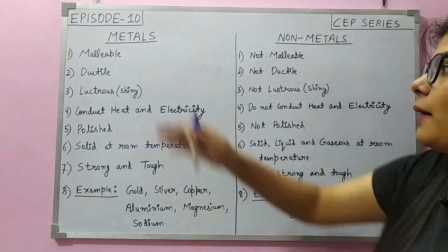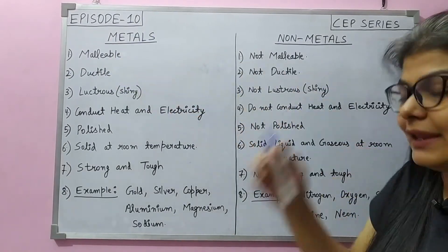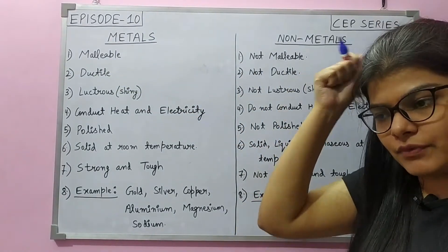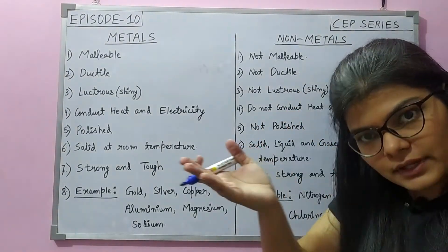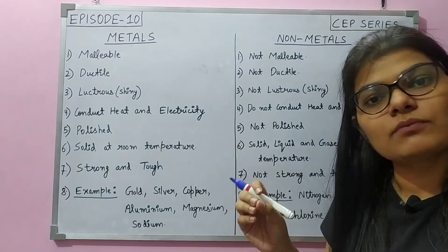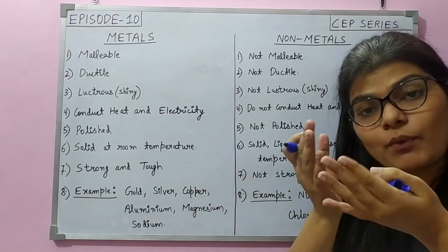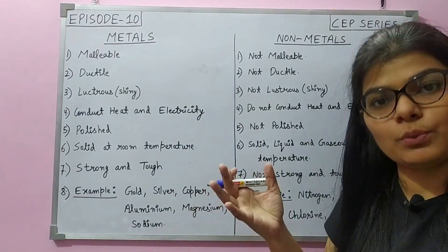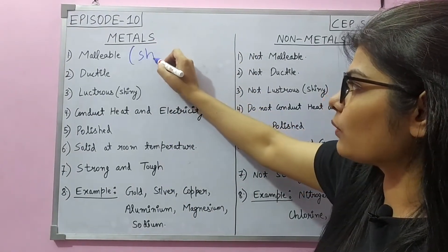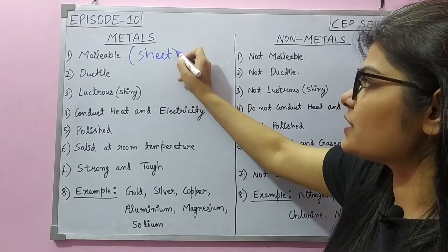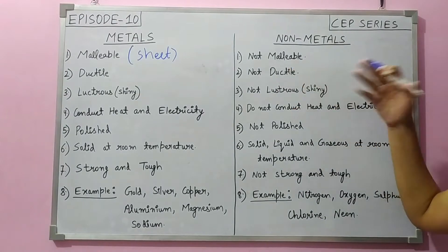Metals are malleable. What is malleability? Malleable means that if I am hammering — with the help of a hammer, hitting the metal continuously — I can make a thin sheet of it. As you can see, aluminum foil is a sheet. Why are we able to make a sheet of aluminum? Because it is a metal. So metal shows the property of malleability — it can be made into sheets. Non-metals are not malleable.